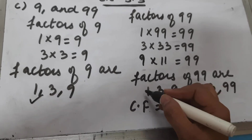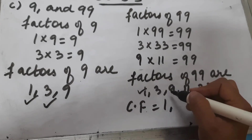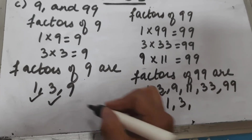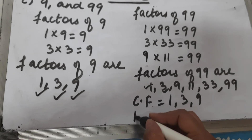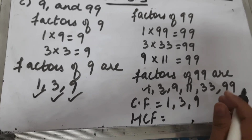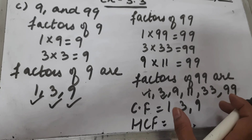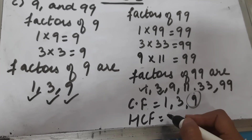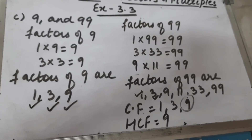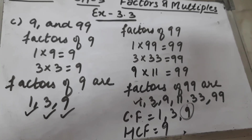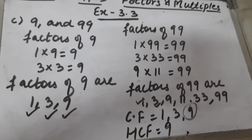The common factors of 9 and 99 are 1, 3, and 9. The highest common factor is 9, so HCF = 9. This completes question one of exercise 3.3. I hope this is clear and you will be able to solve the rest of the parts of question 3.3 by yourself.